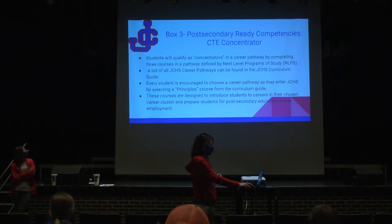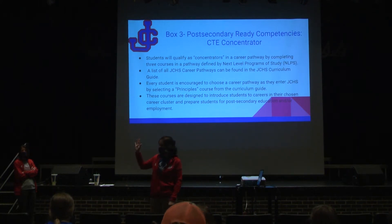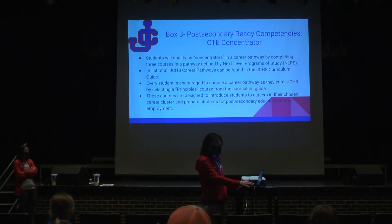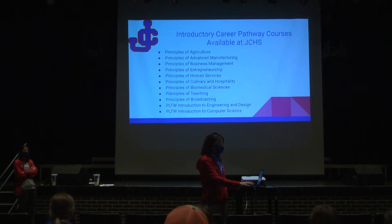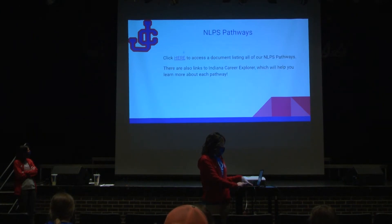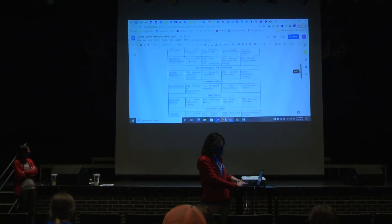To become a CTE concentrator, you take all three courses in a sequence — they start with the principles courses. How many of you are in a principles course this year, like principles of manufacturing or principles of business? If so, you've already started that pathway and you'll want to take the next course as long as you're still interested. If you didn't take one this year, you can sign up for it next year. You'll receive a document through your email showing all the classes in your pathway.